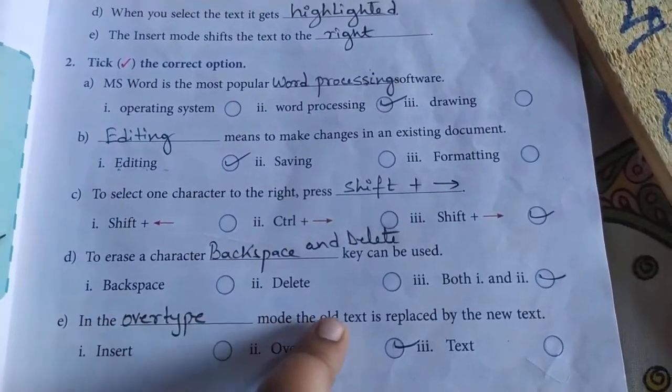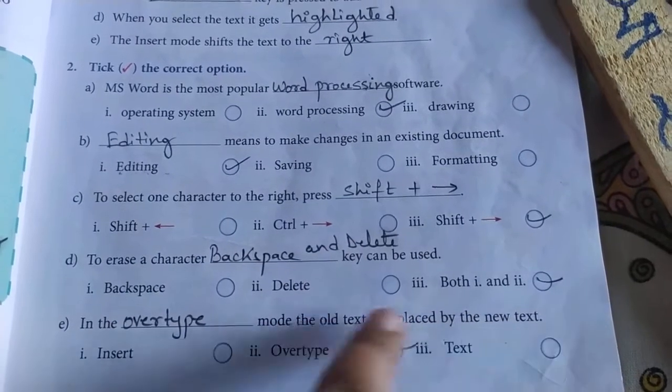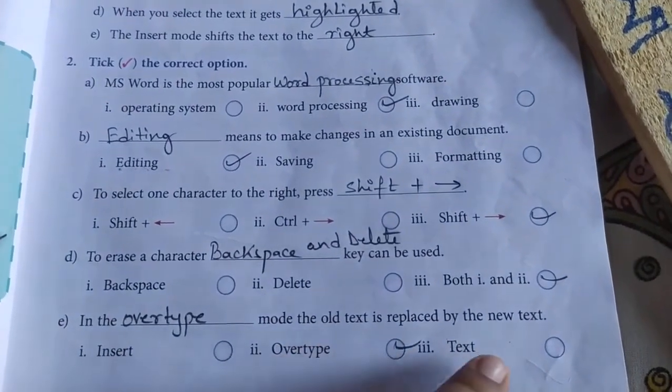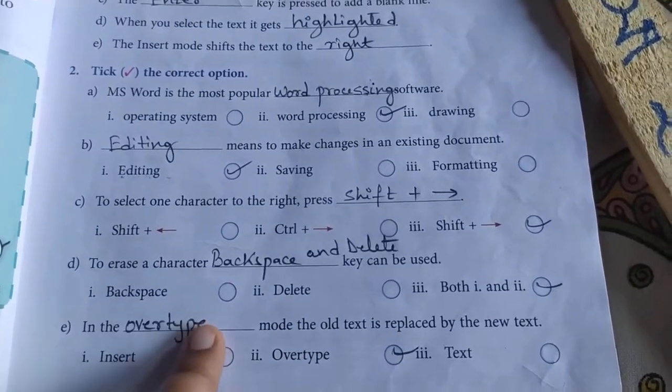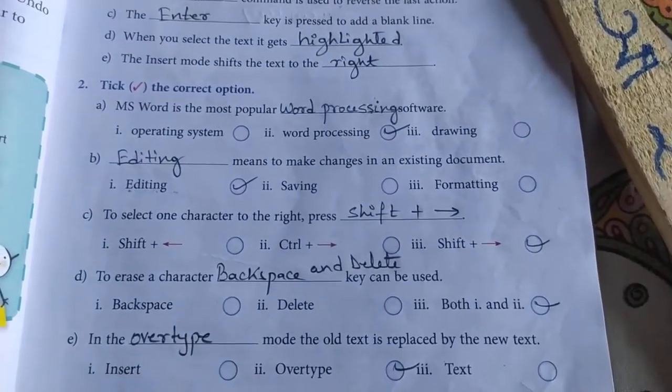In the blank mode, the old text is replaced by the new. Options: insert, overtype, text. Overtype is the correct answer. Give a tick and write the answer over here. Let's turn the page.